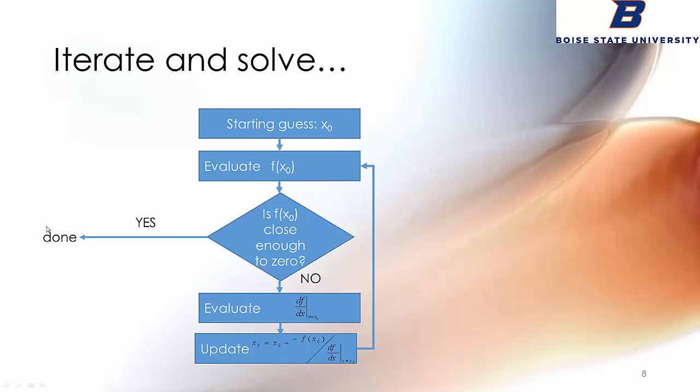If you got lucky, you're done. There's the answer. But you probably didn't get lucky, so you want to evaluate the slope at that guess. You'll get a number out of that. Then you update your guess by this formula: x0 minus f of x divided by the slope. Then you start over again. Evaluate it again. Apply the convergence criteria. If not, keep going. For well-behaved functions with a reasonable guess, this converges very rapidly.